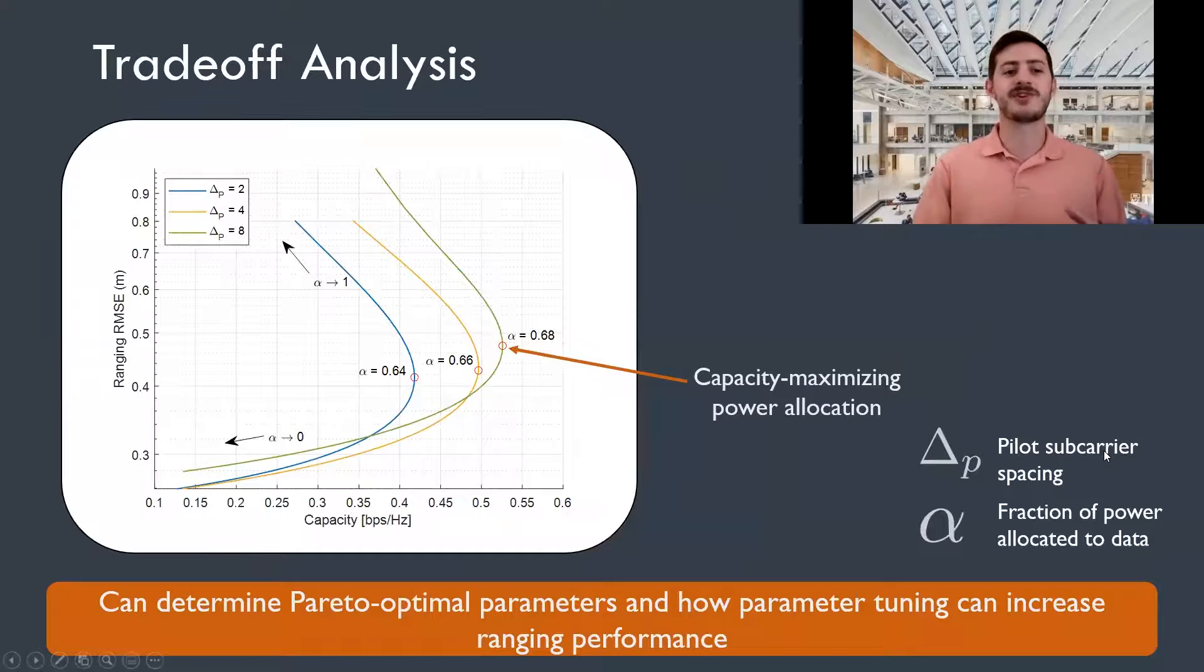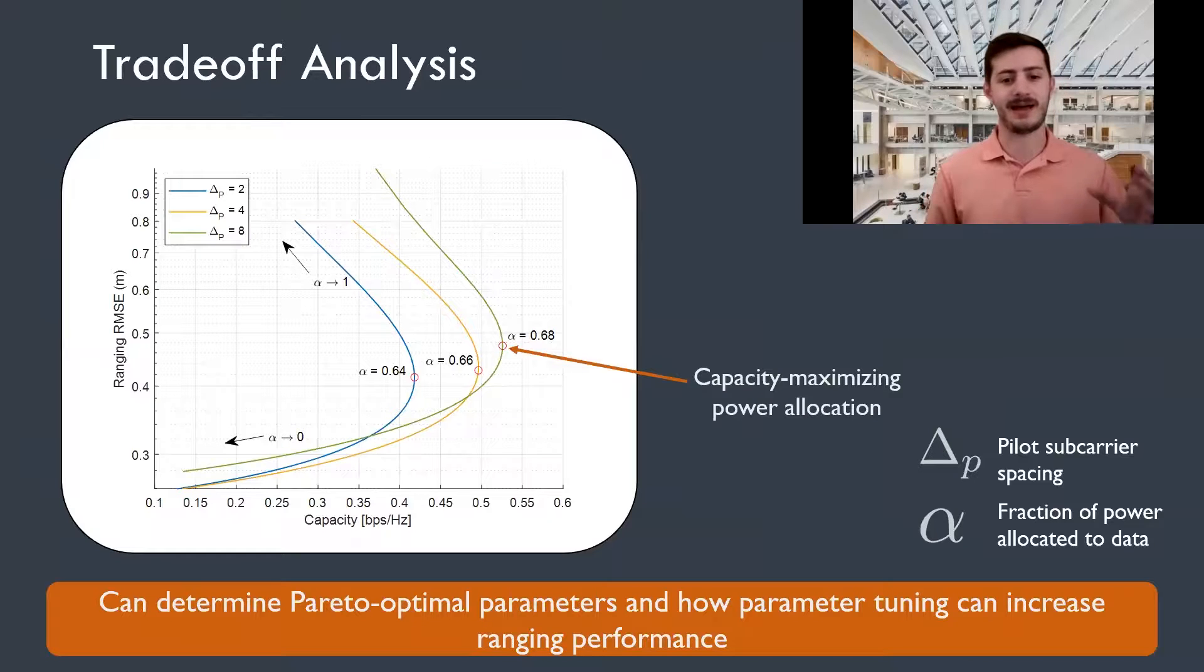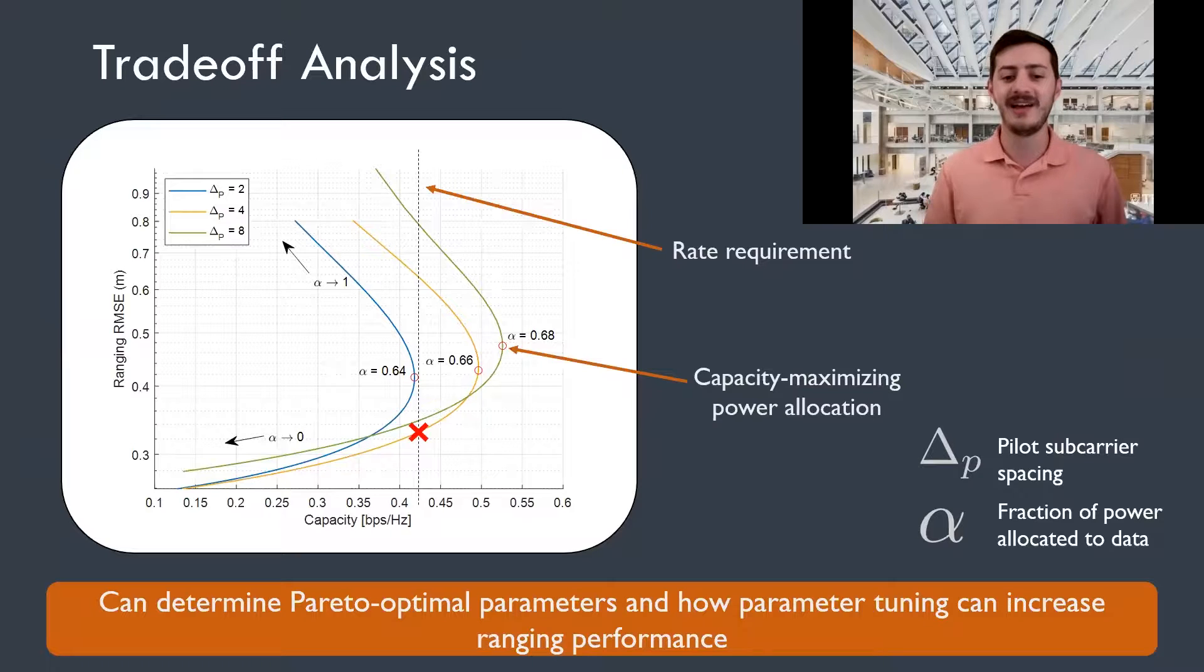So the most interesting analysis that you can do with this study is directly plotting the tradeoff between capacity and ranging error. So here we varied the pilot spacing and the pilot power allocation. And this allows you to determine the Pareto optimal parameter set you want to use and how tuning these can increase your ranging performance while still meeting certain capacity requirements. You know, one example is if we have a strict rate requirement, we can determine, hey, having pilots every four subcarriers is the optimal. And we can determine what the power budget needs to be to meet that.